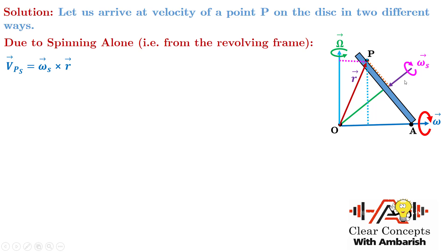Why is that? Because this R vector can be resolved into two components: one along the green line and the other perpendicular to it. When you take the cross product of omega_spin with R vector, that can be divided into omega_S cross R_parallel plus omega_S cross R_perpendicular. And omega_S cross R_parallel goes to zero since parallel vectors have zero cross product. So, I can write the speed of point P due to spinning alone as omega_S cross this vector R.